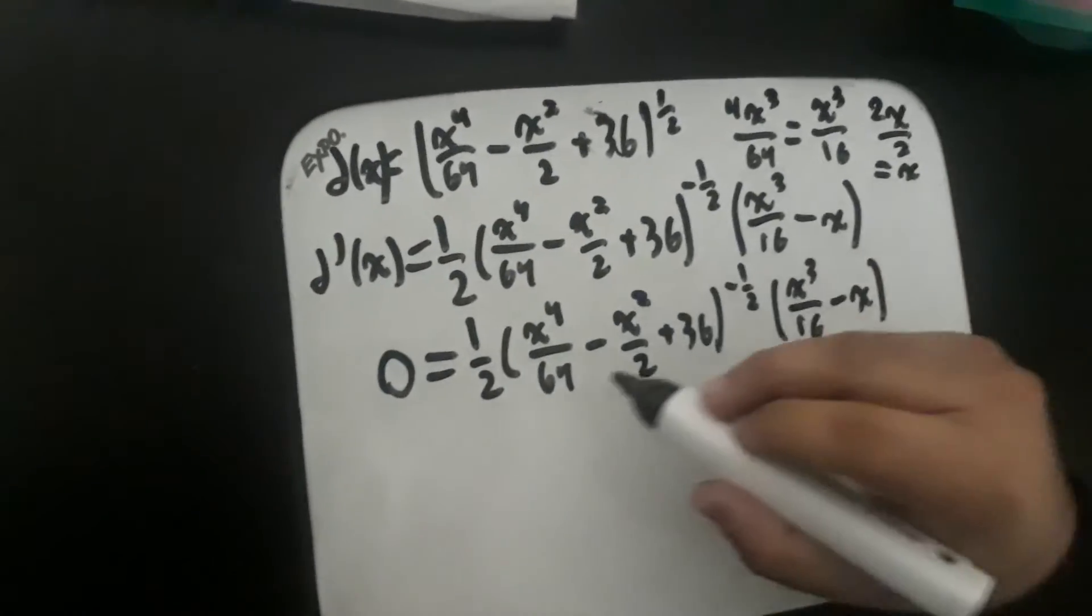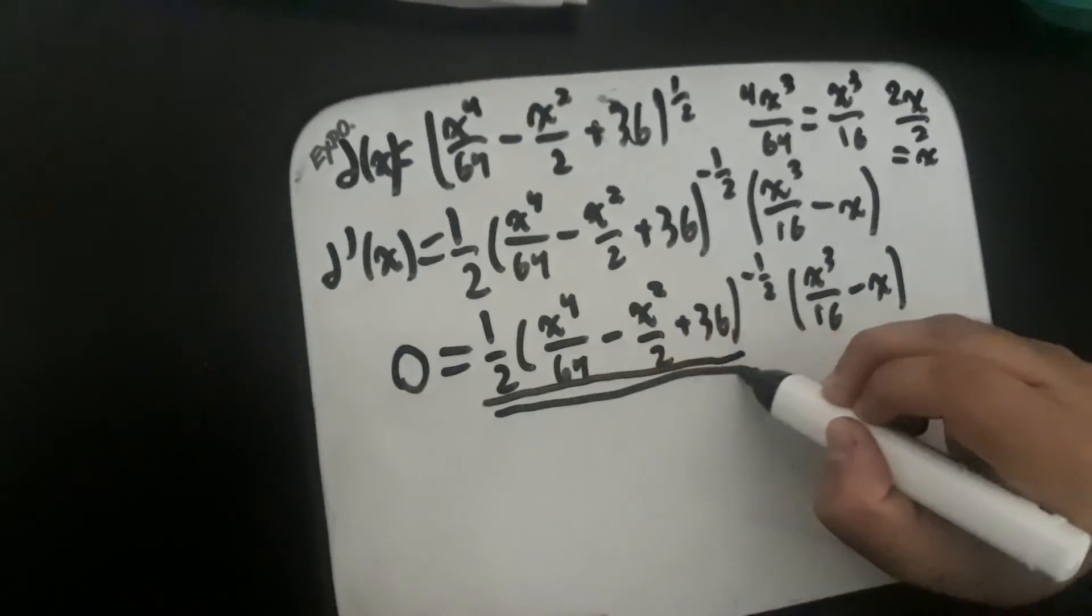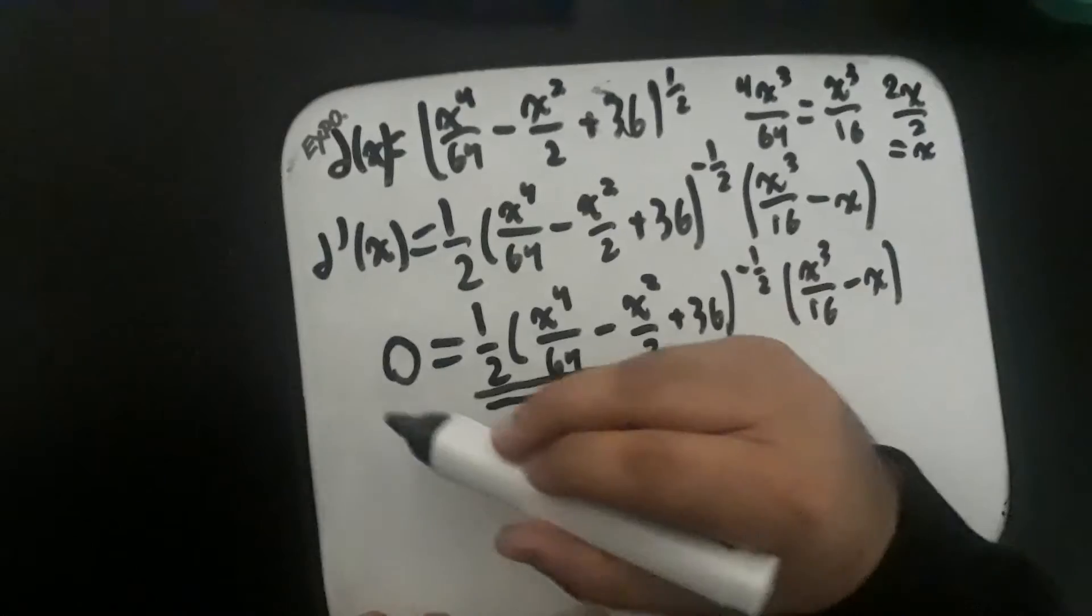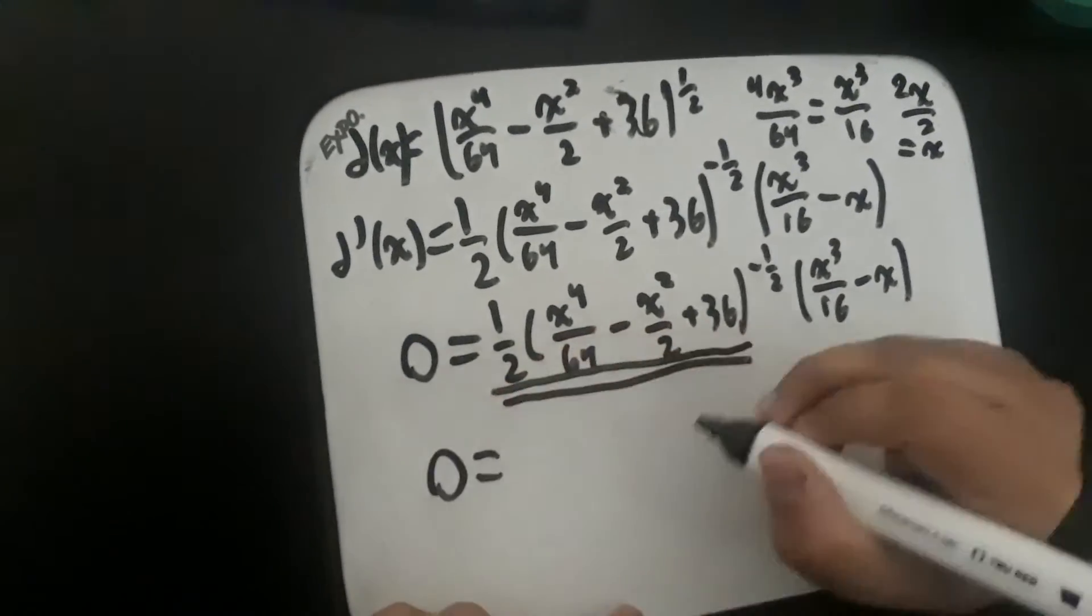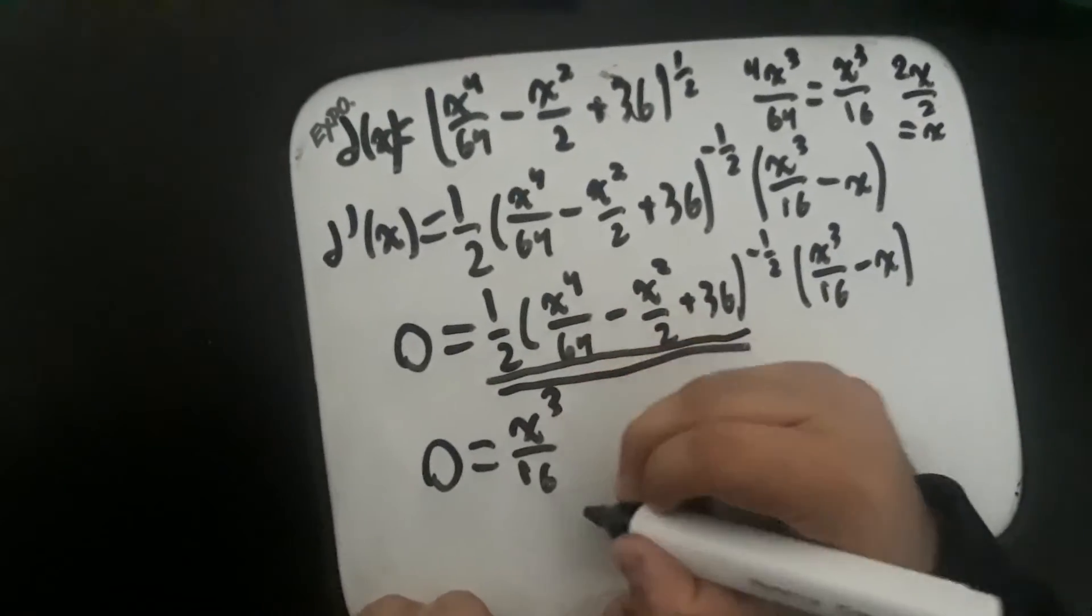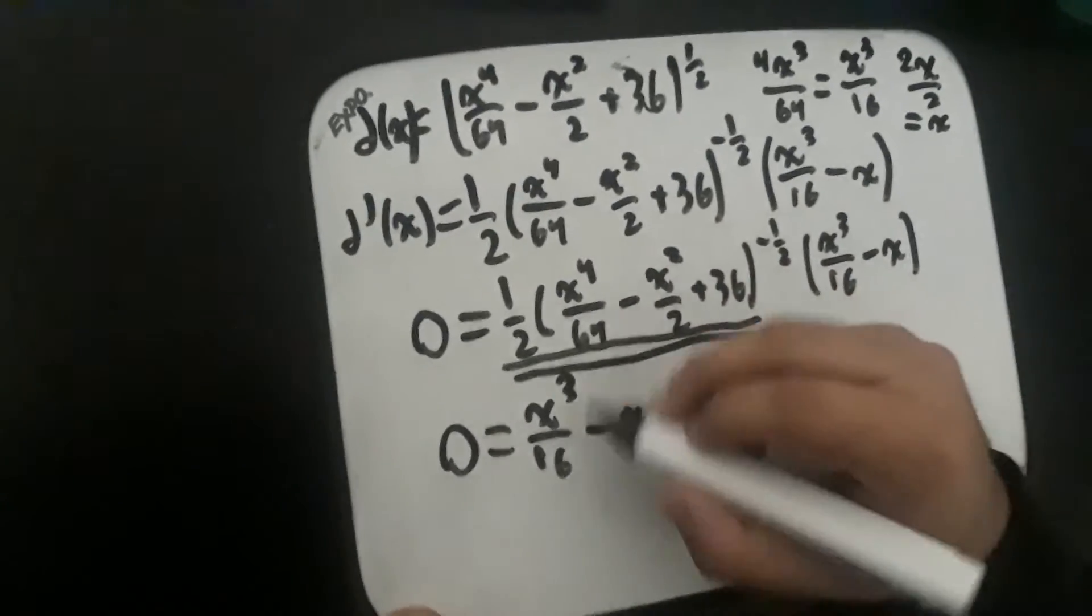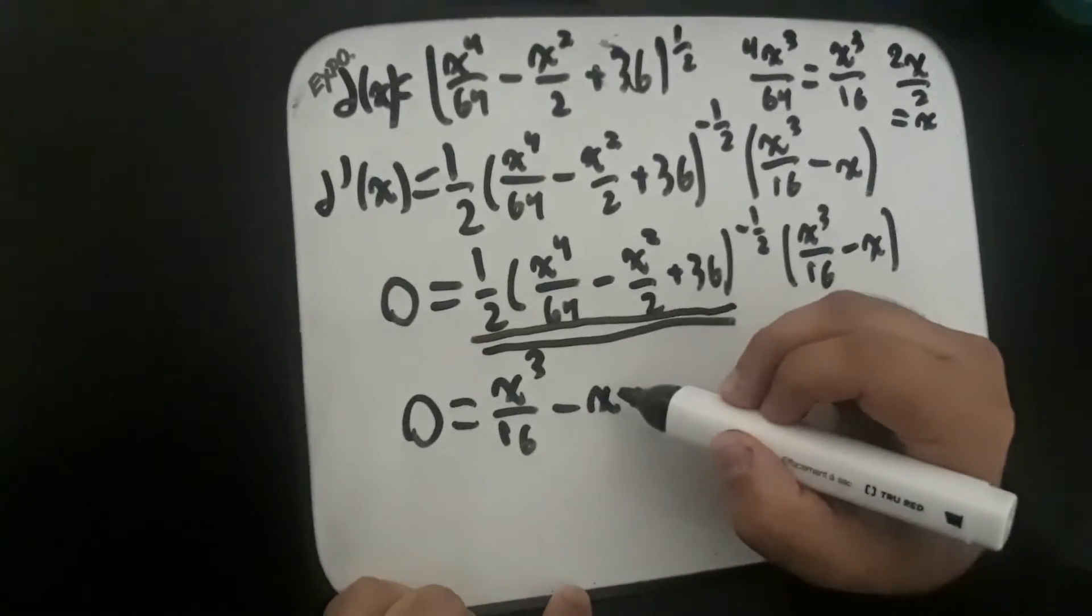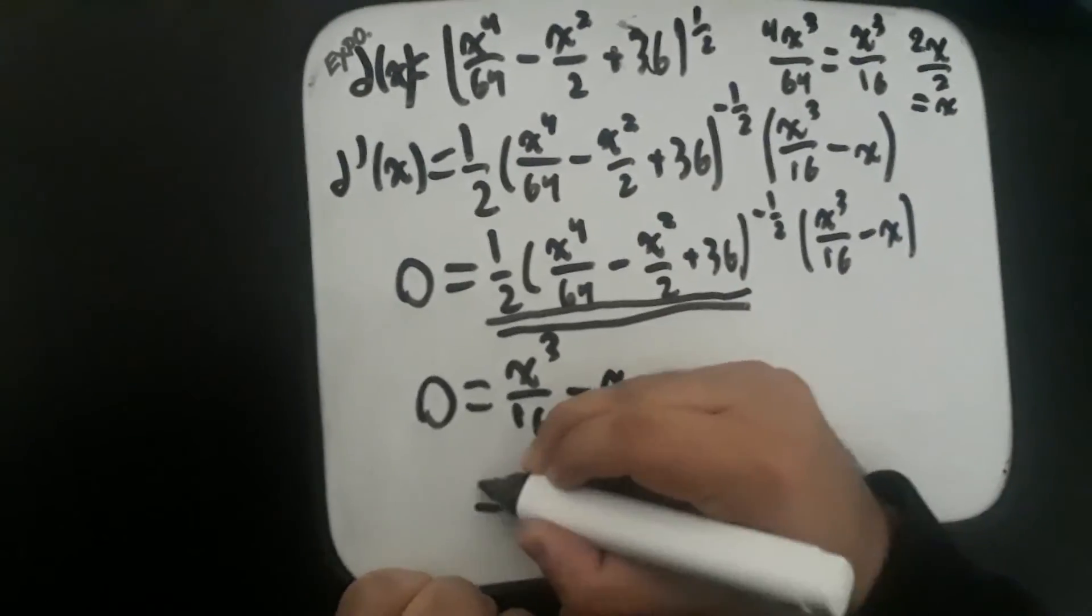So now we can divide both sides by this entire part, and 0 divided by this would end up being 0, which leaves us with 0 equals x cubed over 16 minus x.